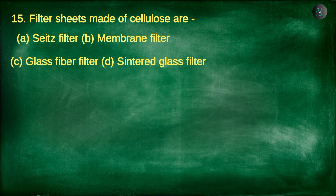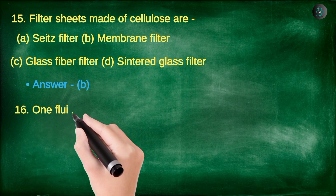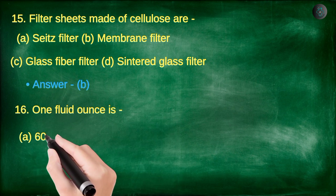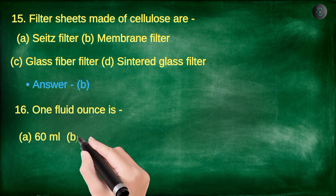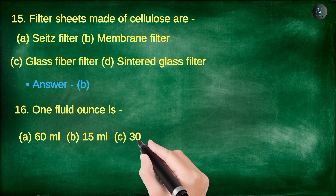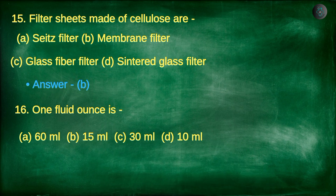Next question. One fluid ounce is: A. 60 ml, B. 15 ml, C. 30 ml, D. 10 ml.